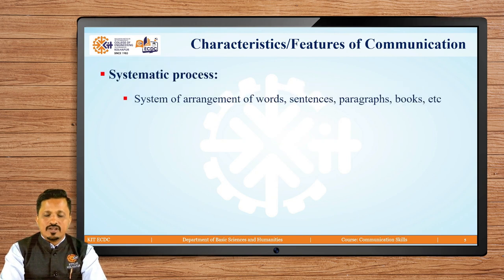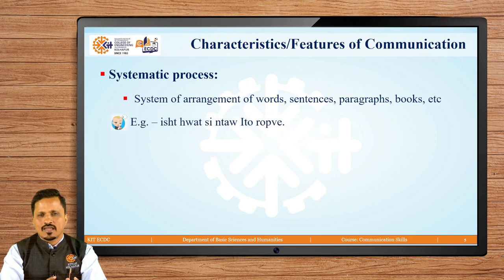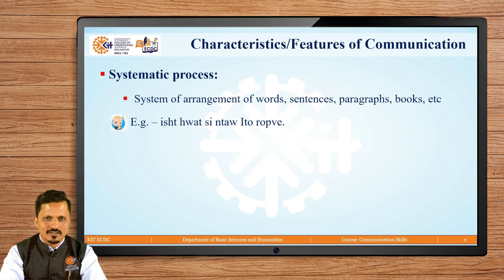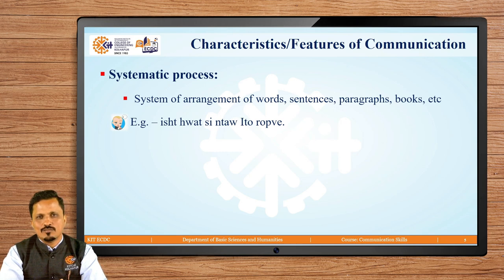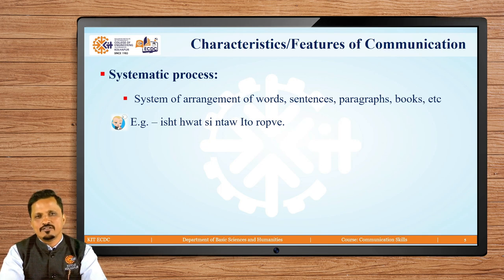The next characteristic is very important: communication is a systematic process. Unless it follows a particular system, it cannot be communication. It is a systematic arrangement of words, sentences, paragraphs, books and so on. For example, just pause and try to identify a given sentence — it takes more than usual time because it is not in systematic arrangement. The system of English language — spelling, sentence construction, subject-verb-object pattern — is not followed, making it difficult to identify.